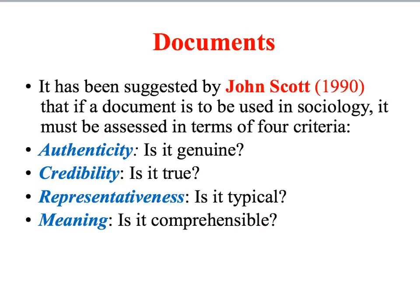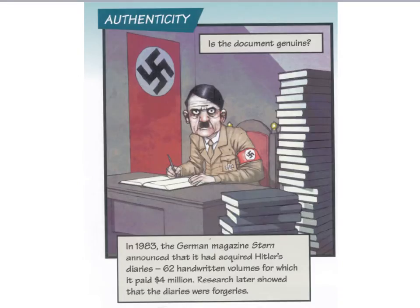To get the most out of documents in sociological research, John Scott argues that we need to assess the value of documents in terms of four criteria: authenticity, credibility, representativeness, and meaning. Authenticity is about whether or not the document we're looking at is genuine. The types of questions sociologists should ask to ascertain authenticity include: Is the document what it claims to be? Is it complete? Is it a copy? Is it free from errors? And who actually wrote the document?